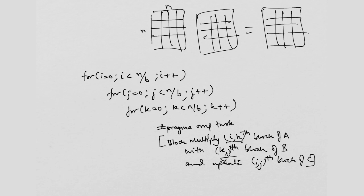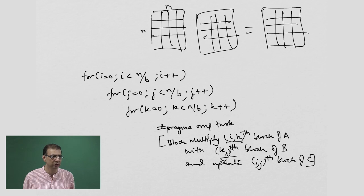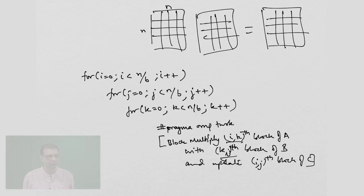Now, C is getting updated, but there is going to be race conditions, because we are updating the same variables. So, what can I do?